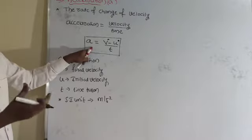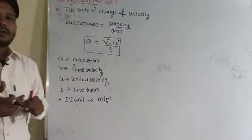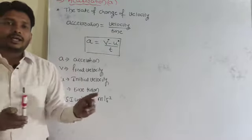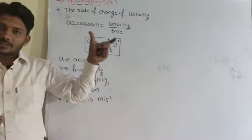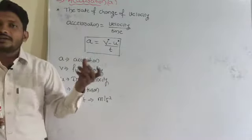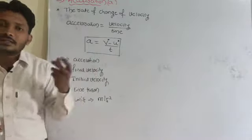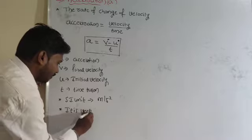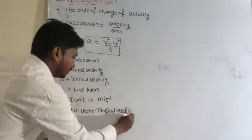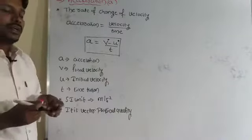Now I can consider whether acceleration is a scalar physical quantity or a vector physical quantity. A physical quantity having only magnitude is called scalar. A physical quantity having both magnitude and direction is called vector. Acceleration is velocity divided by time, and velocity is a vector quantity, so acceleration is also a vector physical quantity.